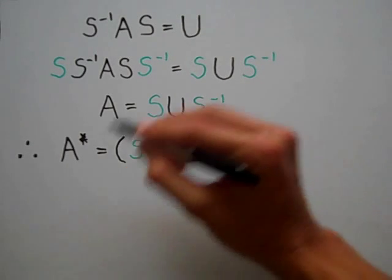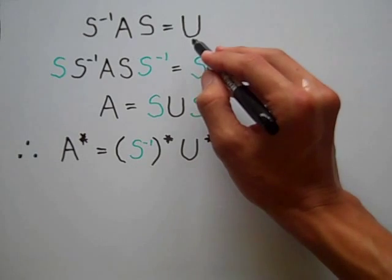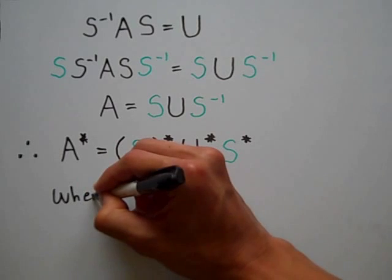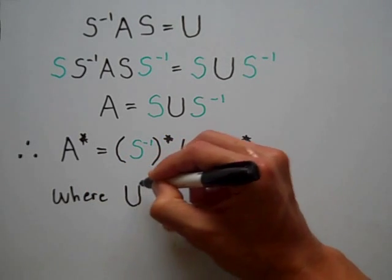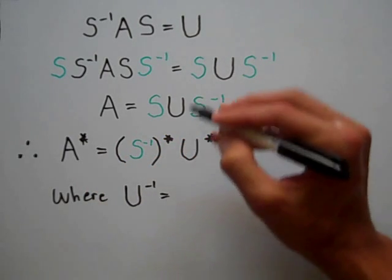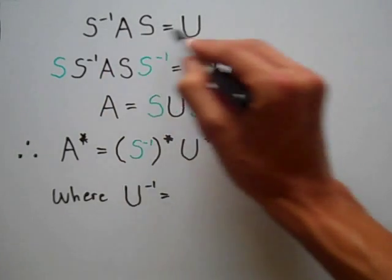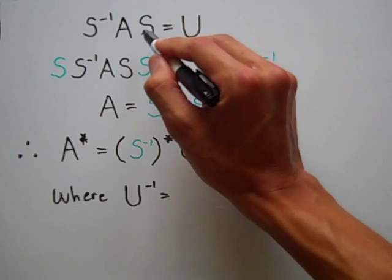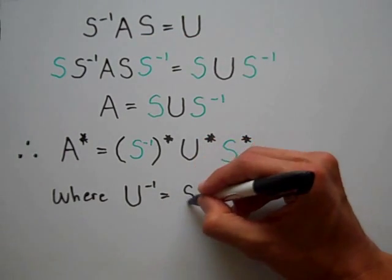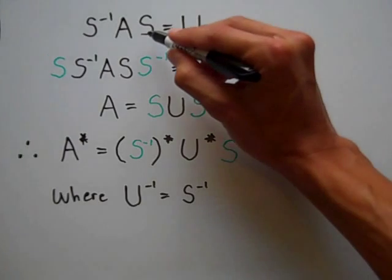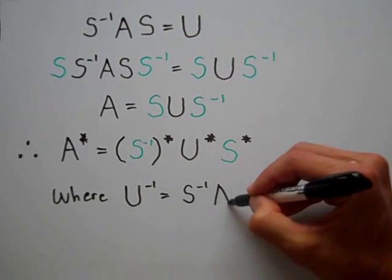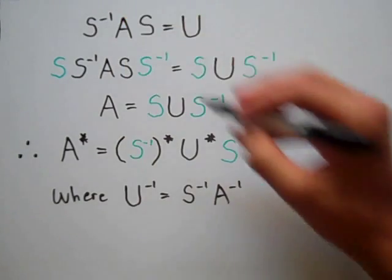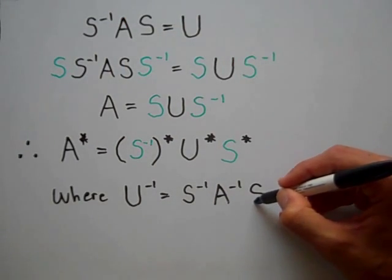Using this first equation and taking the inverse of both sides, U inverse will be equal to — when I take the inverse of the left-hand side, the order will reverse — so that will be S inverse, times A inverse, times the inverse of S inverse, which is S.